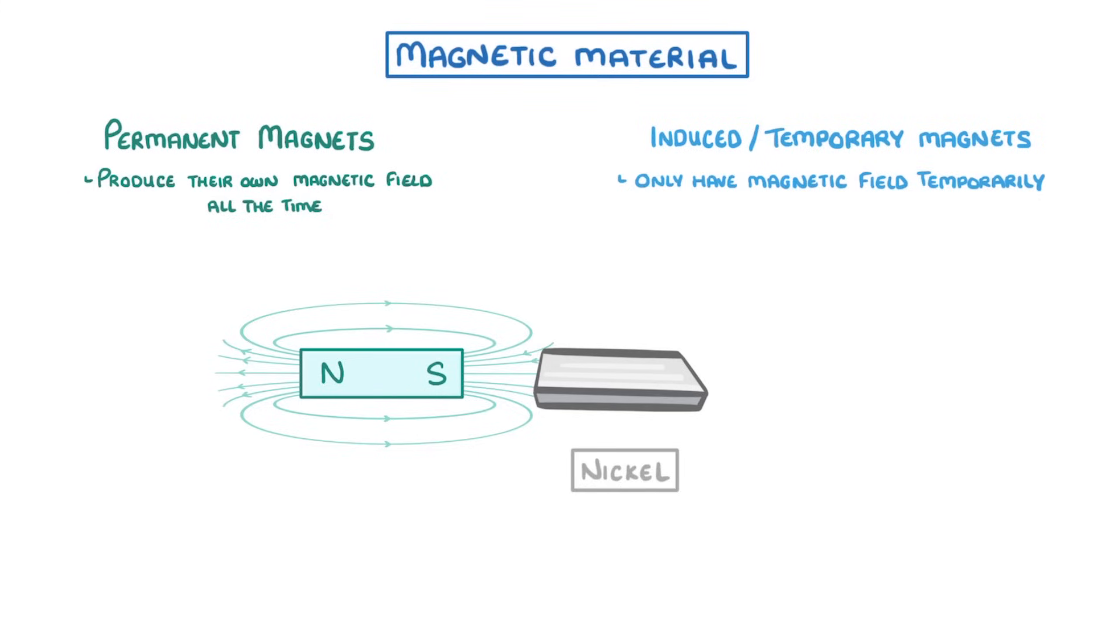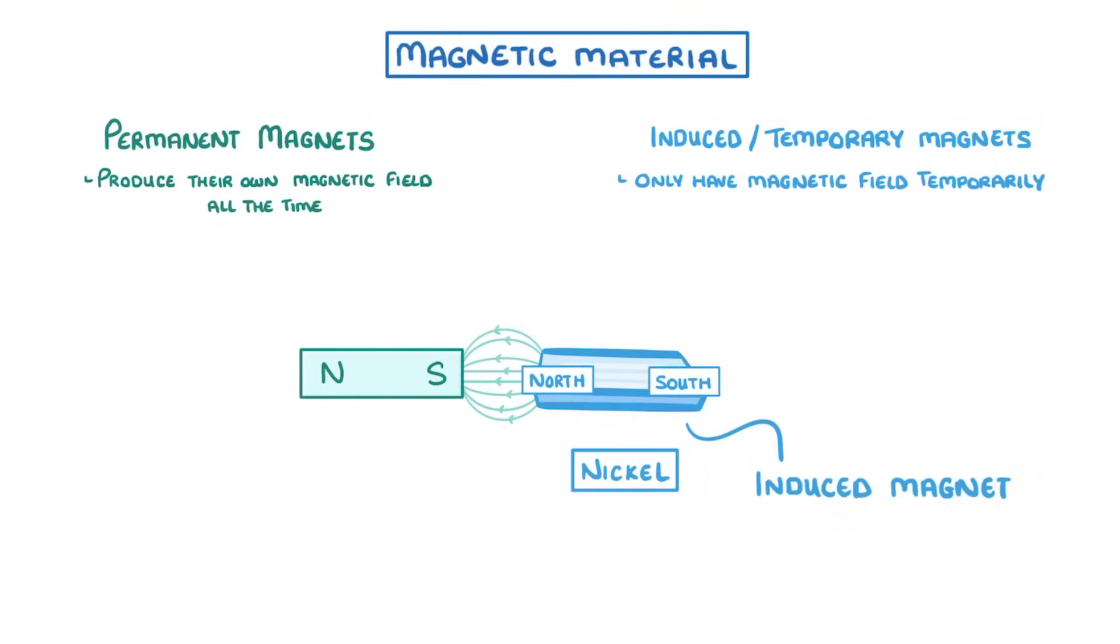This induces the piece of magnetic material to develop its own magnetic field, with its own north and south pole, and thus we call it an induced magnet. And the key point to remember with induced magnets is that the force between a permanent and induced magnet will always be attractive, which is why the left side of our piece of nickel became a north pole rather than a south pole.